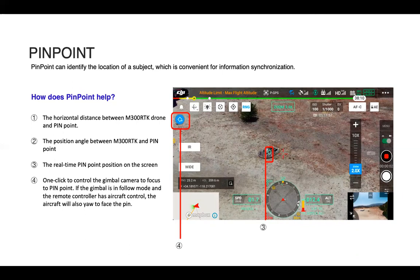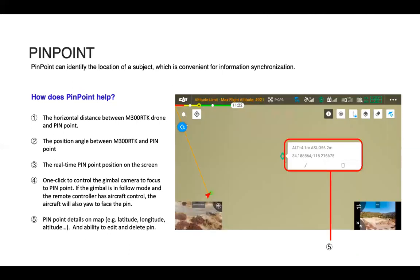If the gimbal is in follow mode and the remote controller has aircraft control, the aircraft will also yaw to face the pin. You'll also be able to see the pinpoint details on the map: latitude, longitude, altitude, and here's where you can also edit and delete the pin.